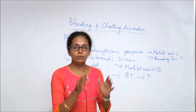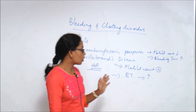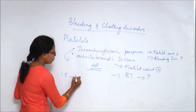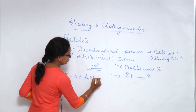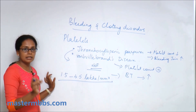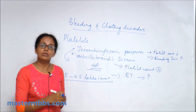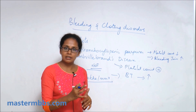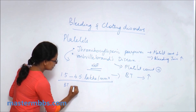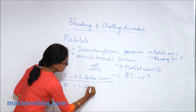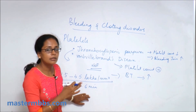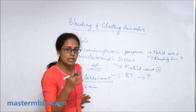Now you have to analyze: is his platelet count normal? The normal platelet count is between 1.5 to 4.5 lakhs per mm³ of blood. Here the platelet count is just 45,000, so the platelet count is abnormal. Normal bleeding time is 1 to 6 minutes; here the bleeding time is 15 minutes, so the bleeding time is also prolonged — again abnormal.